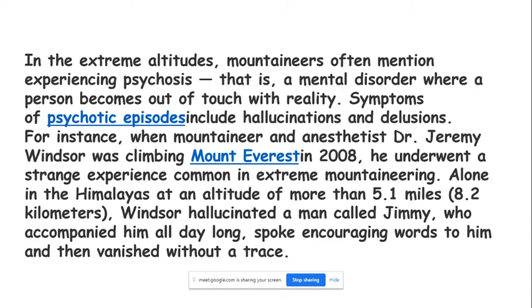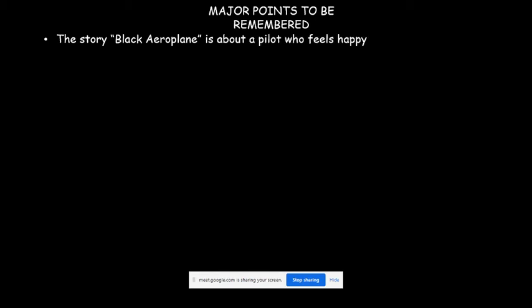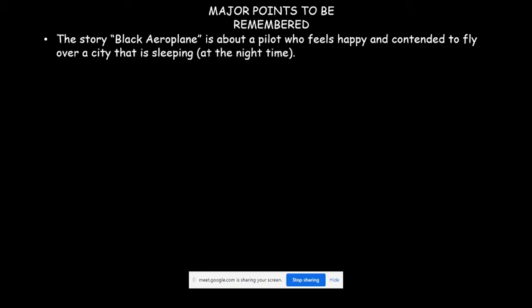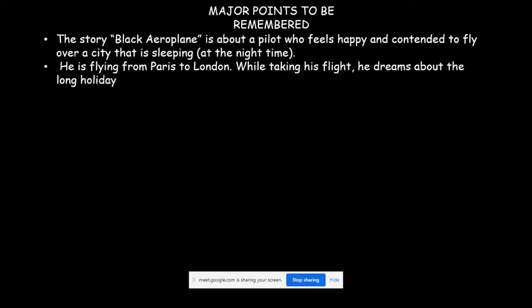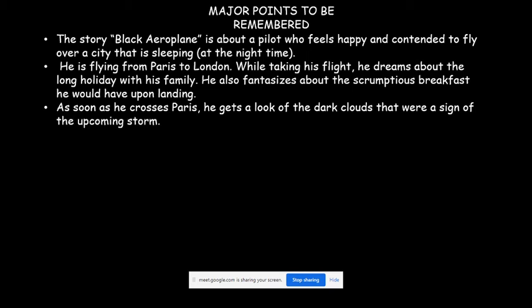Now for the major points to remember — write these in your notebook. The story 'Black Aeroplane' is about a pilot who feels happy and content flying over a city sleeping at night. He is flying from Paris to London. While taking his flight, he dreams about a long holiday with his family and fantasizes about the scrumptious breakfast he would have upon landing. As soon as he crosses Paris, he sees dark clouds — a sign of the upcoming storm.